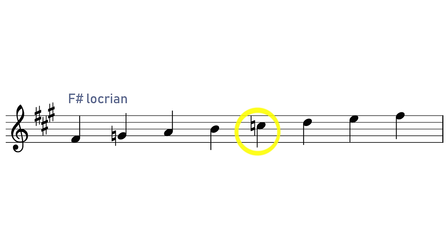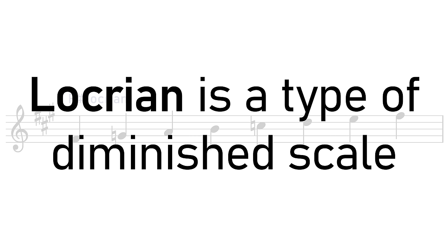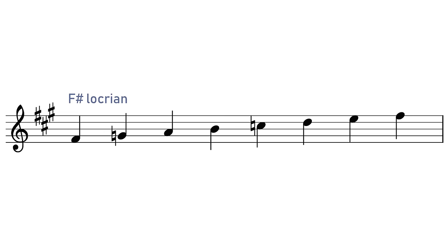So we can actually categorise it as a type of diminished scale. And this is part of the reason why it's so hard to use, because the tonic chord of the Locrian scale is a diminished chord, and diminished chords are unstable. They want to move somewhere else.